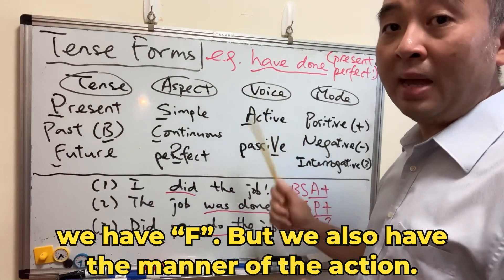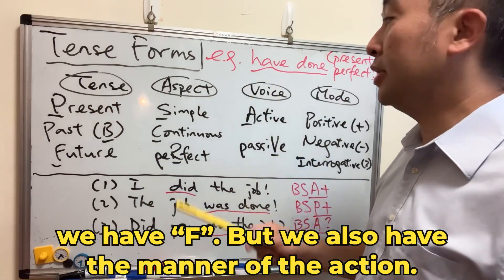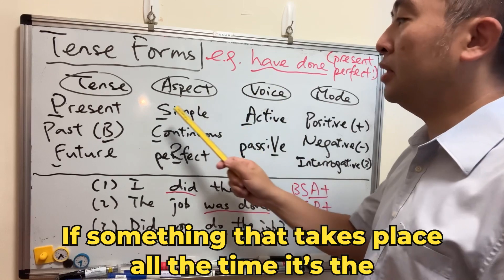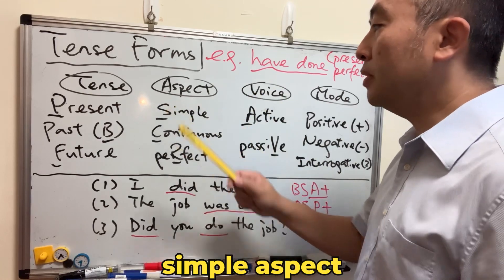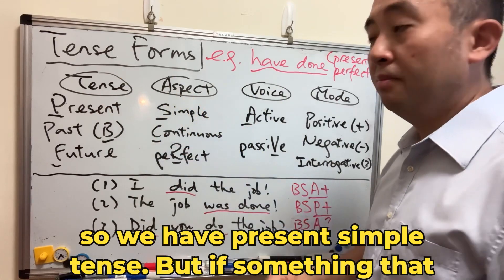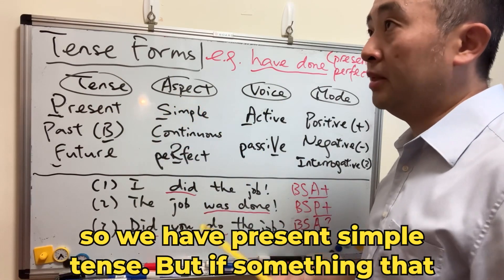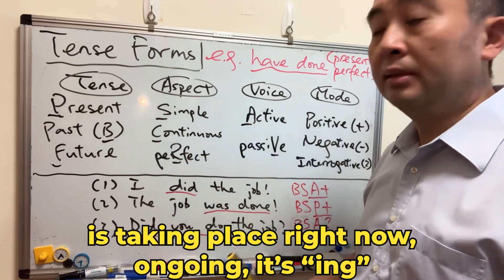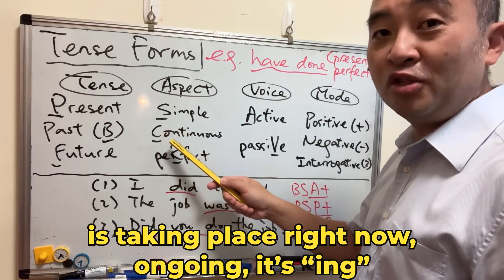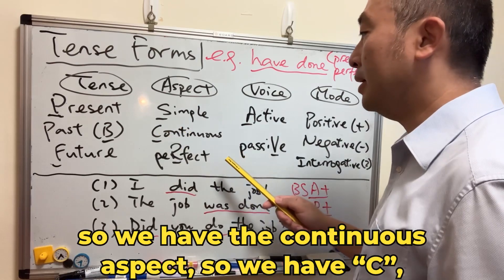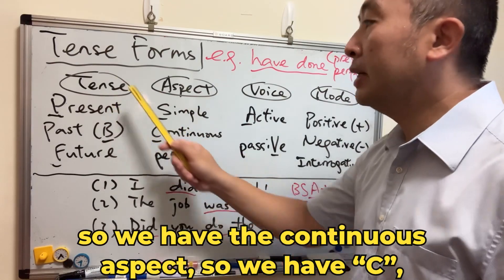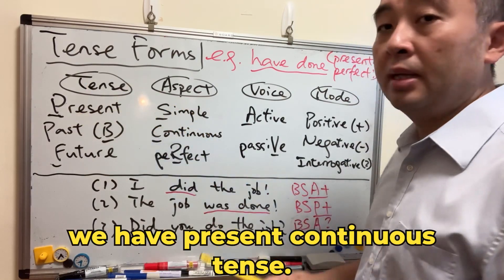But we also have the manner of the action. If something takes place all the time, it's the simple aspect — so we have present simple tense. But if something is taking place right now, ongoing, it's ING — so we have the continuous aspect, C — we have present continuous tense.